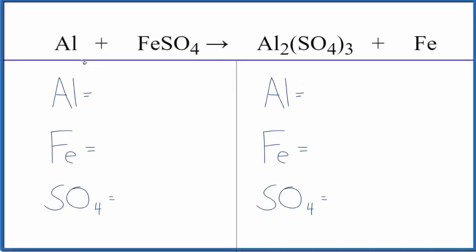Let's write the balance equation and type of reaction for Al plus FeSO4, aluminum plus iron 2 sulfate. We'll use a bit of a trick to make this easier to balance.